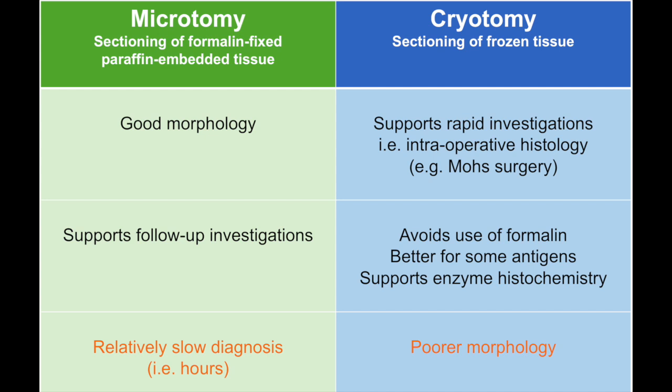Fortunately, as you can see on the right-hand side of this table, there is an alternative to the use of conventional microtomy, known as cryotomy, whereby the tissue, rather than being fixed and processed into paraffin, is simply rapidly frozen in liquid nitrogen, for example, and then sections can be cut through that frozen piece of tissue in a fraction of the time normally required to prepare a paraffin section.